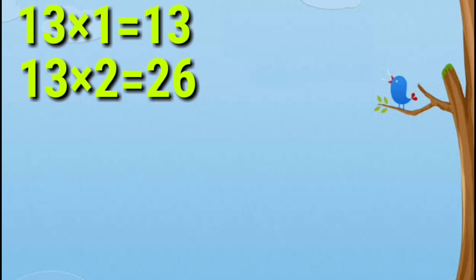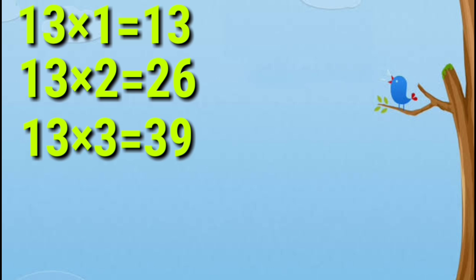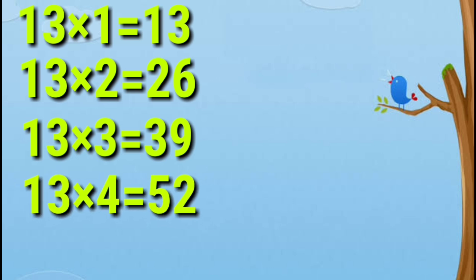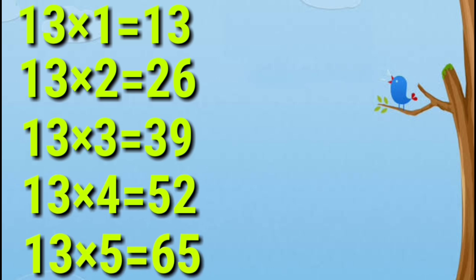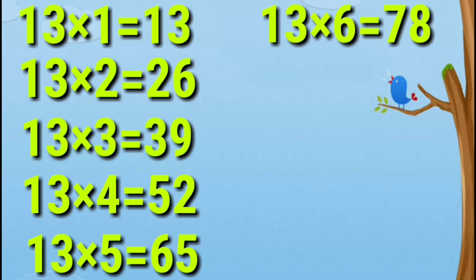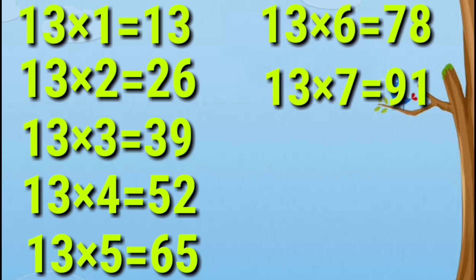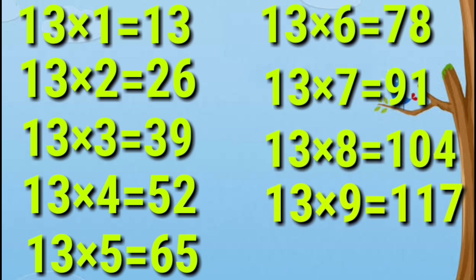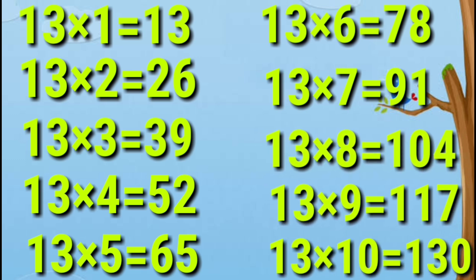13 ones are 13. 13 twos are 26. 13 threes are 39. 13 fours are 52. 13 fives are 65. 13 sixes are 78. 13 sevens are 91. 13 eights are 104. 13 nines are 117. 13 tens are 130.